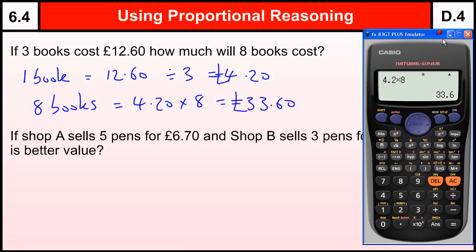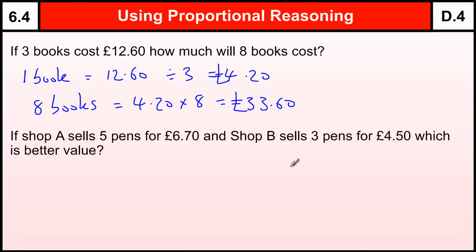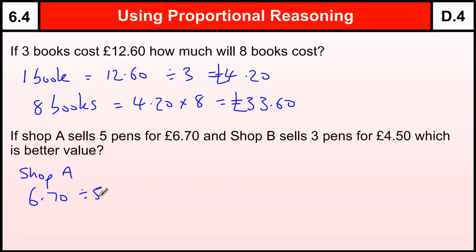Another example — let's just move the calculator down for now. Shop A sells five pens at £6.70, and Shop B sells three pens at £4.50 — which is the better value? To find out which is better value, we need to work out how much one pen costs in each shop. So Shop A: £6.70 divided by five, and Shop B: £4.50 divided by three.